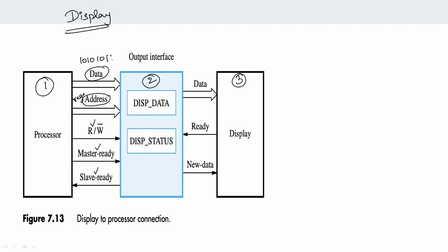We already know master ready, slave ready, and read/write signals, as well as the address. The processor will display data on the screen — for example, 10101011. There are two registers in the output interface: Display Data Register, which stores the data, and Display Status Register.